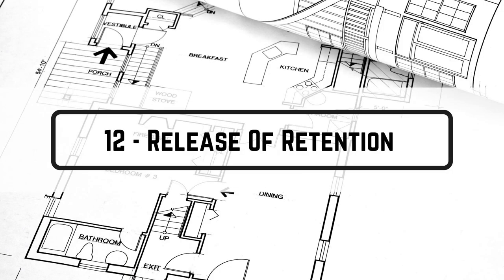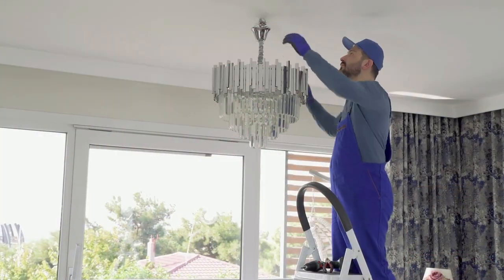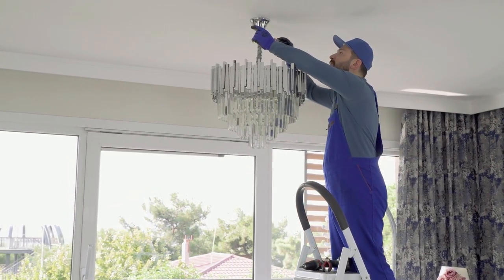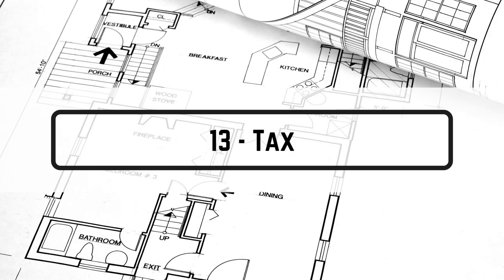Term number eleven is retention. Retention is an amount deducted from monthly payments to guarantee the executed works, and it is usually 10 percent of the total work done. This leads to term number twelve, which is release of retention. The retained amount is usually released partially: half upon completion of works, and the second half after 12 months — the defects liability period — during which the contractor is responsible to repair any defects in the works.